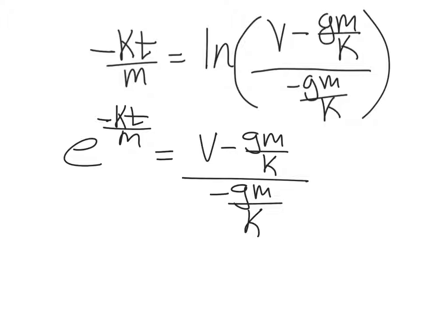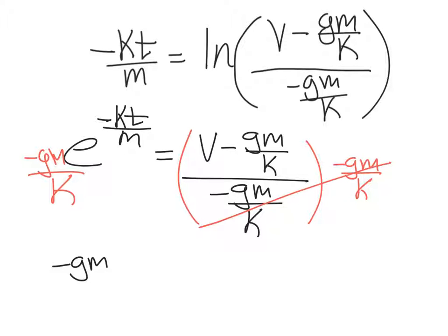We're going to solve for v now. Just two more steps left. I'm going to multiply this entire right side by negative gm over k. And I'm going to multiply the left side by negative gm over k. That will cancel out on the right side. And the left side now is negative gm over k times e to the negative kt over m power. And that's equal to v minus gm over k. And then we have one more step of addition here. We're going to add gm over k to each side.